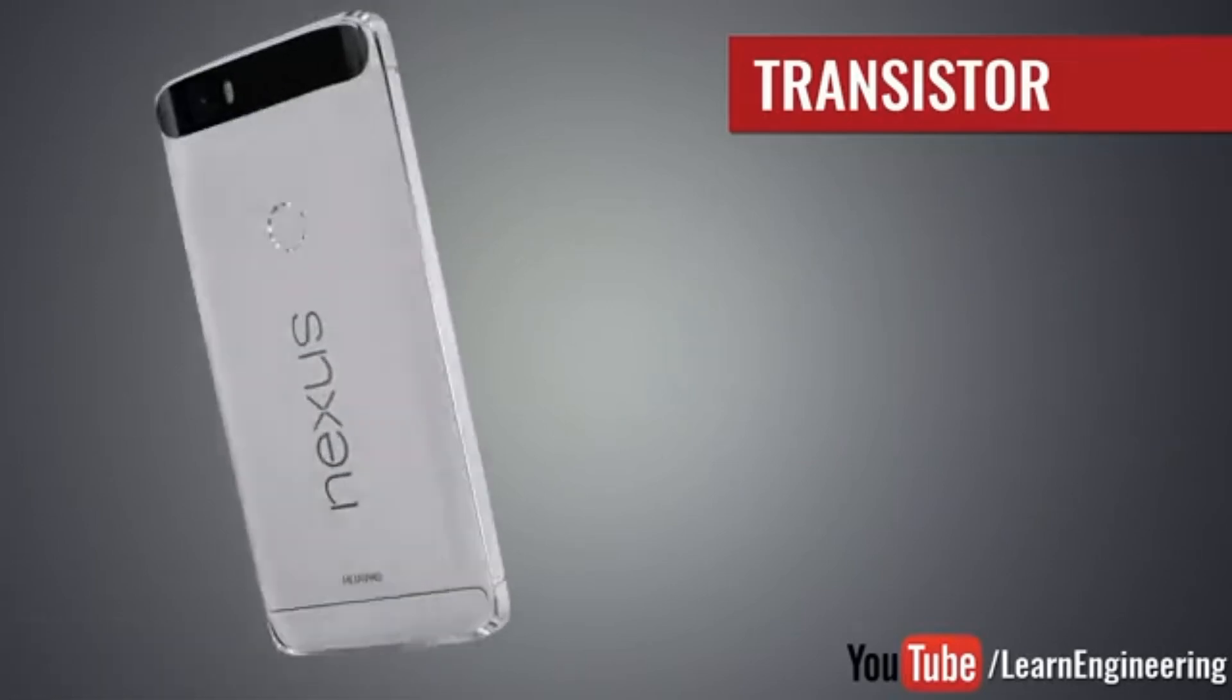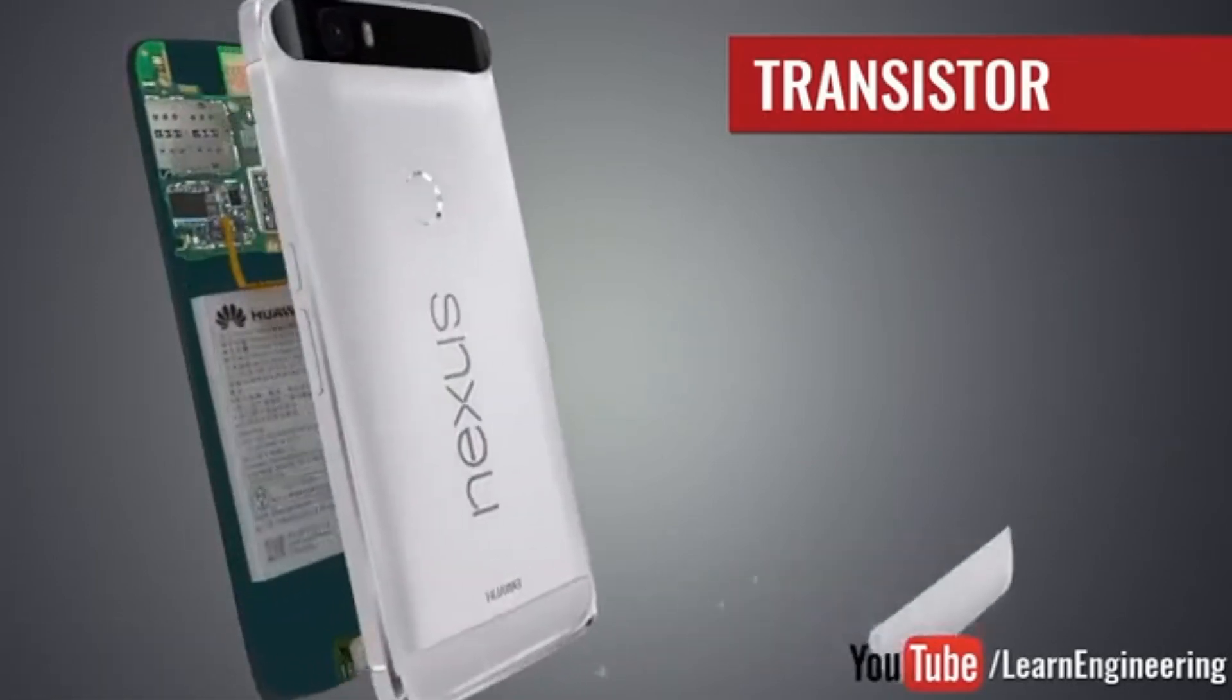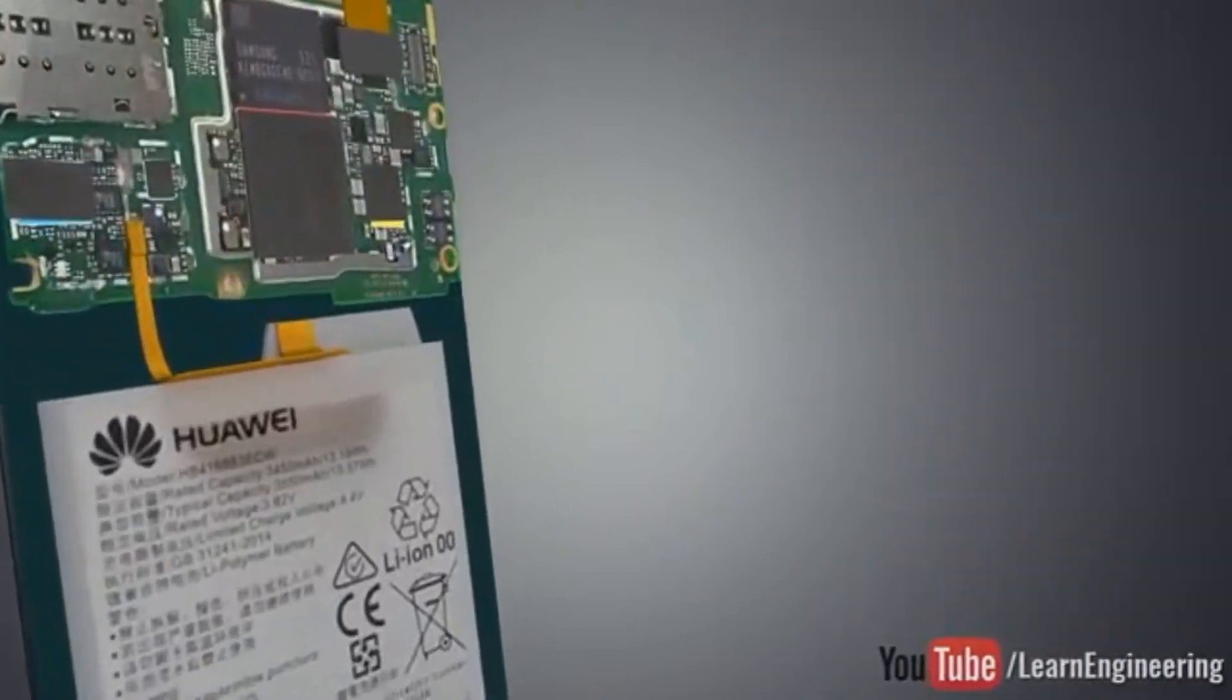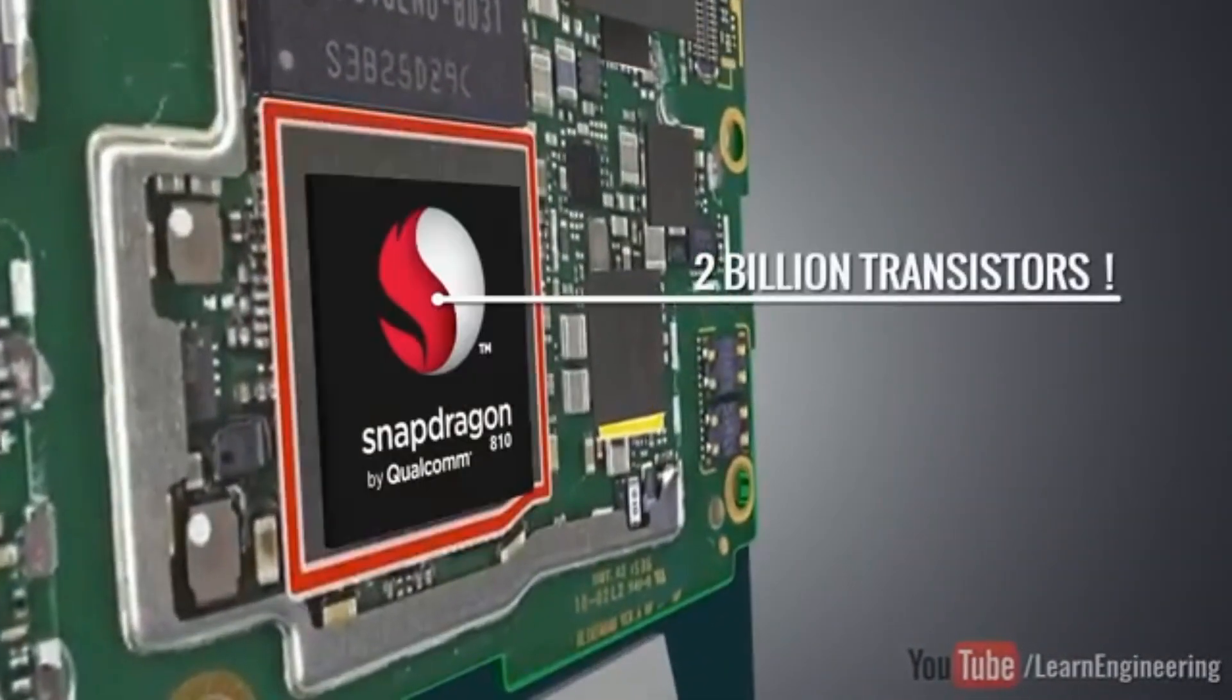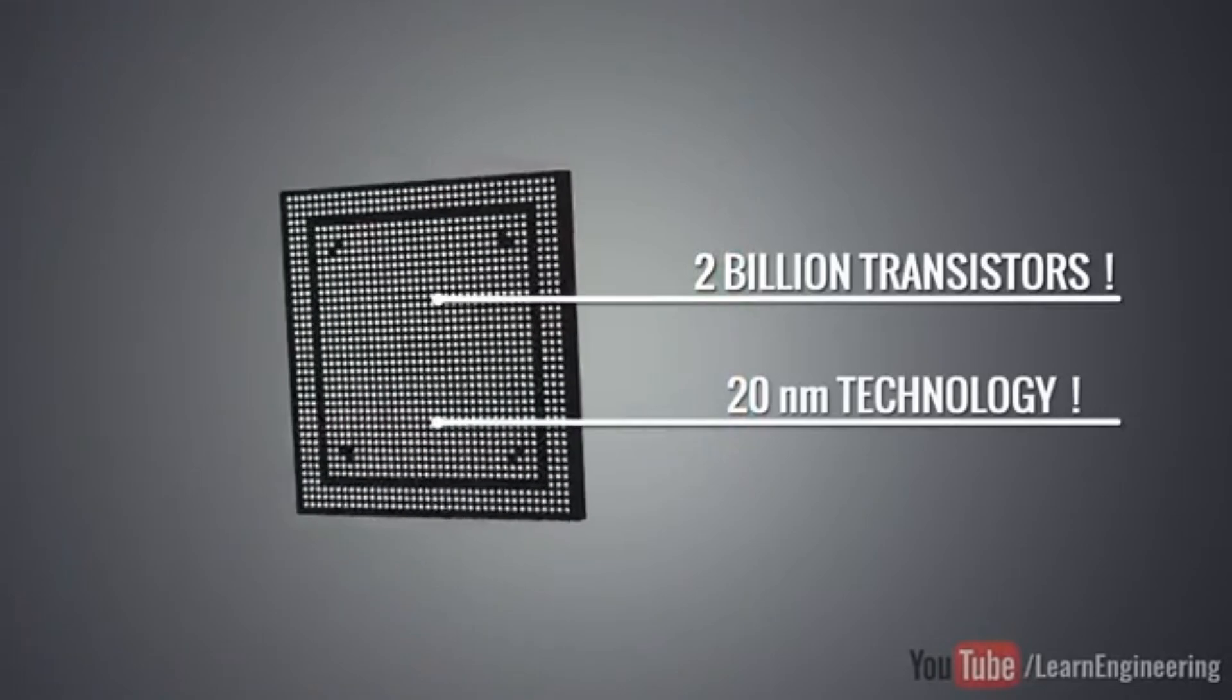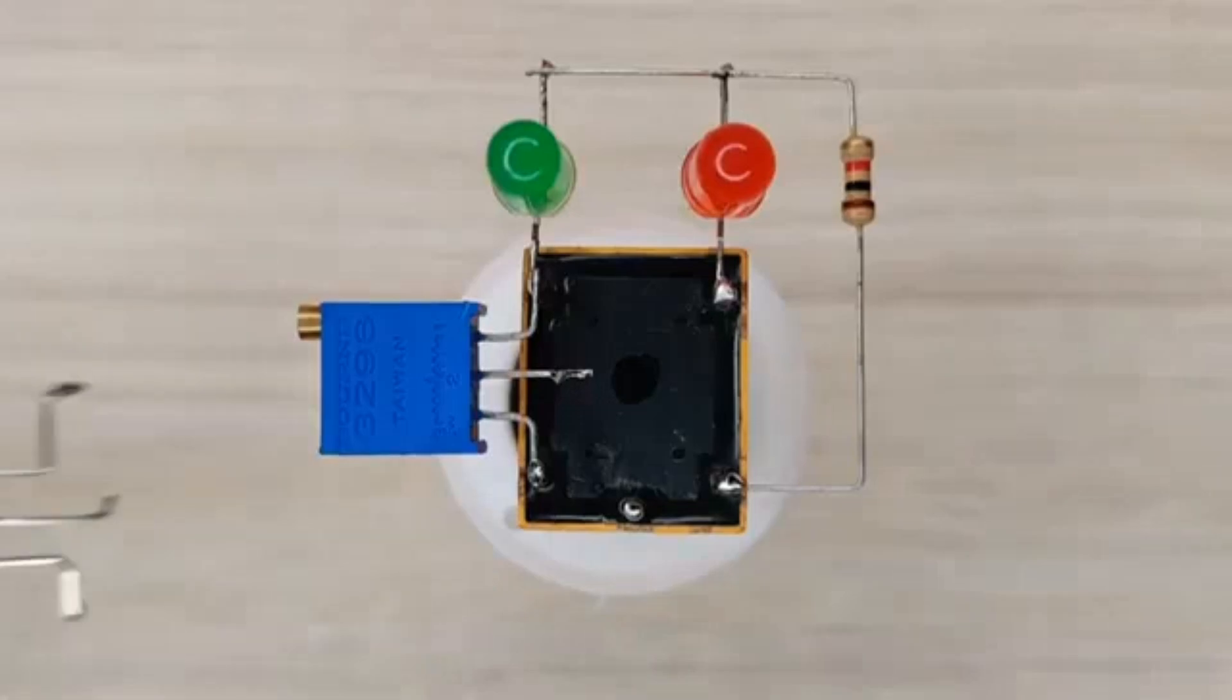To give you an idea of their size, the microprocessor in your computer or mobile phone contains millions, even billions of transistors. Although medium-sized transistors are typically used in electronic circuits.